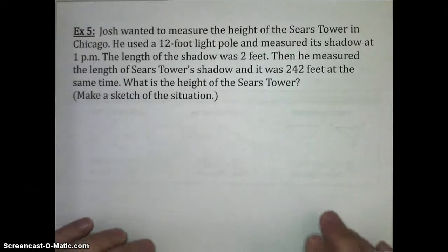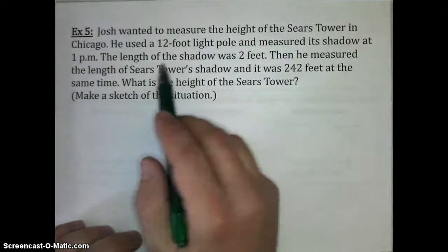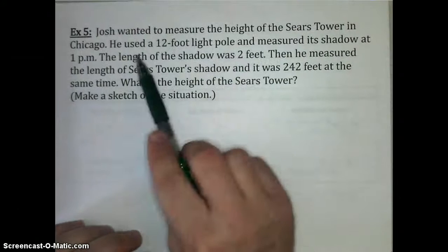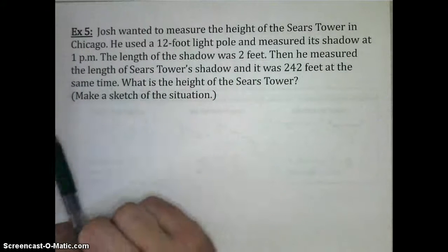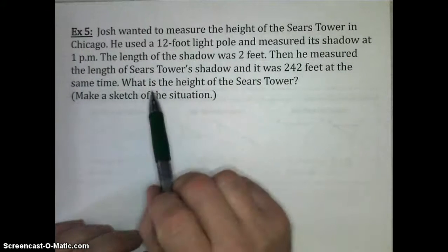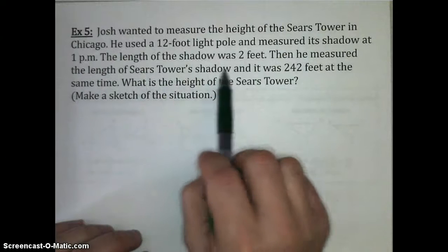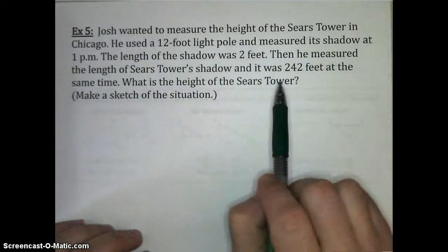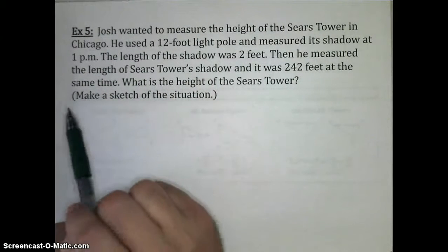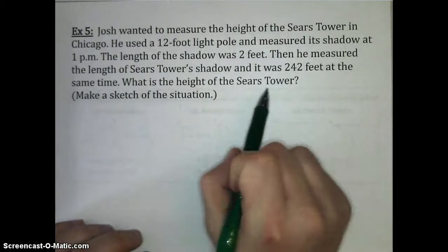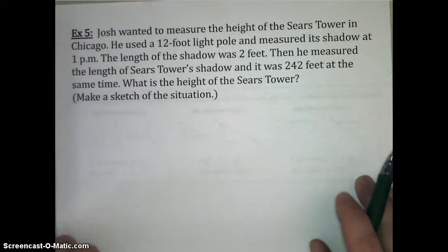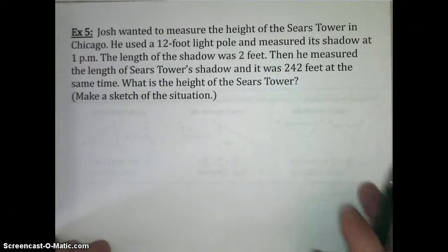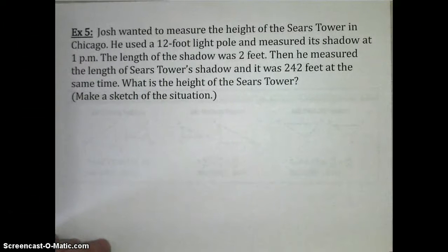All right, let's take a look at our final example here. We have a situation where Josh wanted to measure the height of the Sears Tower in Chicago. He used a 12-foot light pole and measured its shadow at 1 p.m. The length of the shadow was 2 feet. Then he measured the length of the Sears Tower's shadow, and it was 242 feet at the same time, at 1 p.m. What is the height of the Sears Tower? This is an example of indirect measurement, so we're going to actually make a quick sketch of the situation. Okay, I'm going to pause the video and make my sketch, and then I'll continue recording, and you can pause the video once you see it to copy it down.